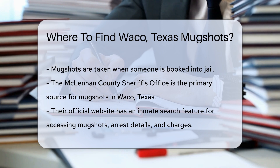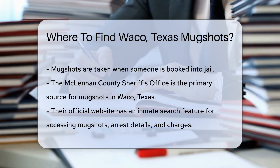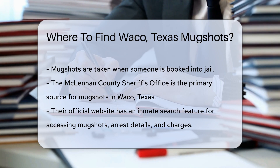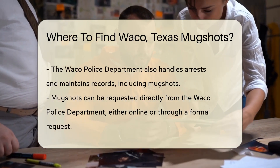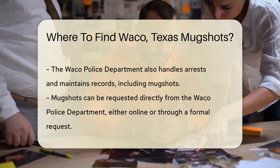Mugshots are typically taken when someone is booked into jail. In Waco, the McLennan County Sheriff's Office is the primary source. They maintain records of arrests and mugshots. You can visit their official website to access this information. The McLennan County Sheriff's Office website has an inmate search feature. This tool allows you to look up individuals currently in custody. You can find mugshots, arrest details, and charges here.